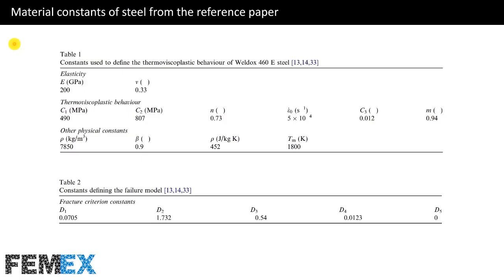Now I want to talk about material constants of steel from the reference paper. These two tables are mentioned in the reference paper and include the material constants of steel. I have used these constants to define the material in the Abacus property module.